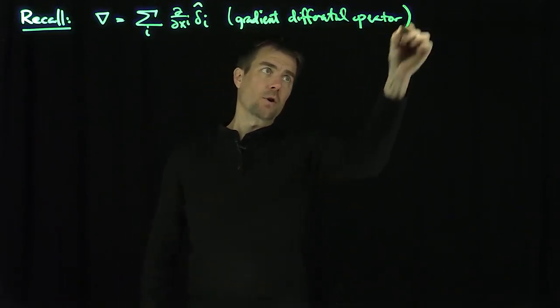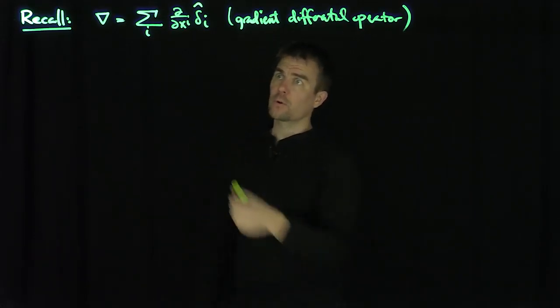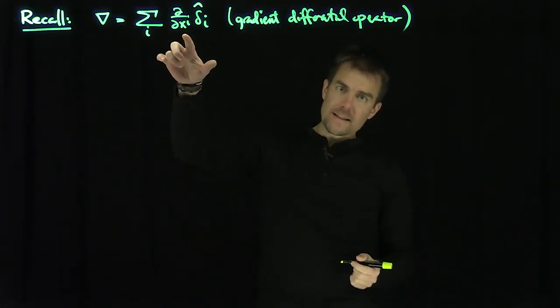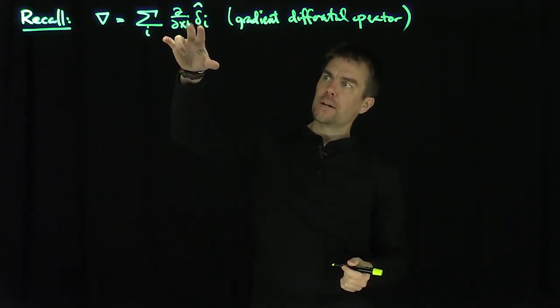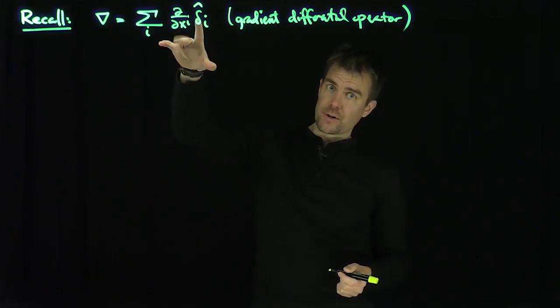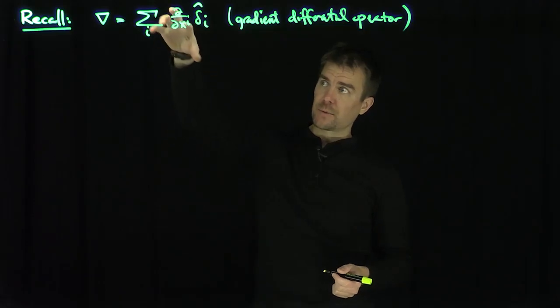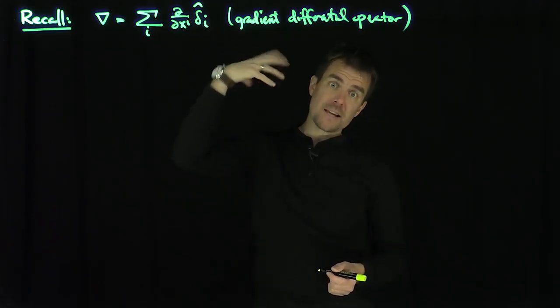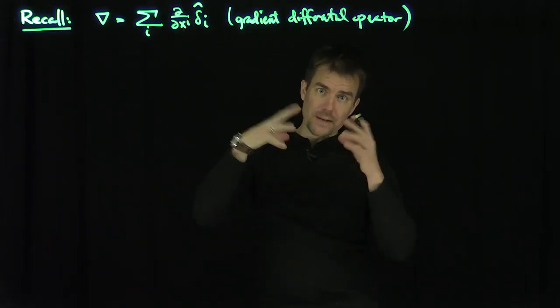Later, when we start discussing covariant and contravariant bases in different coordinate systems, we're going to see that this operation needs to have one covariant component and one contravariant component, because this has two covariant components and doesn't transform in the right way. So later on, we're going to see it's this differential operator times the contravariant basis element.